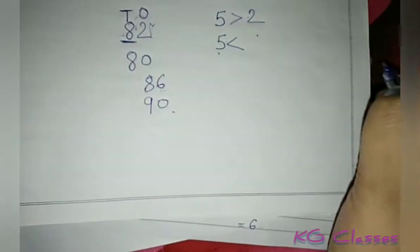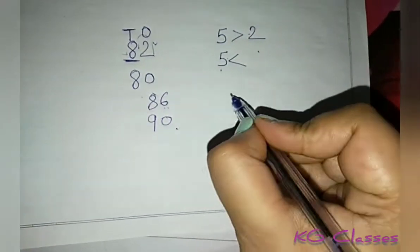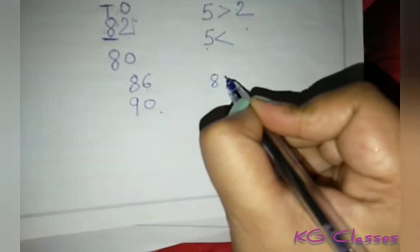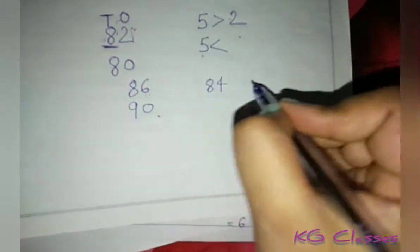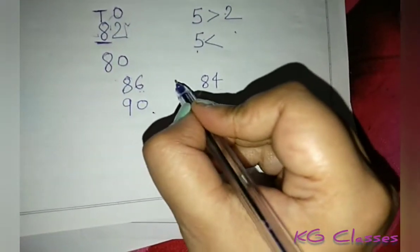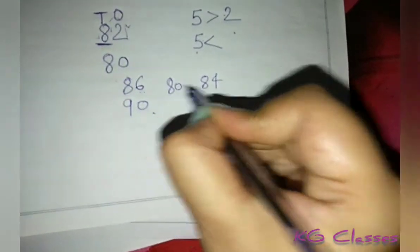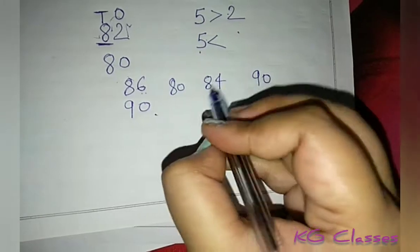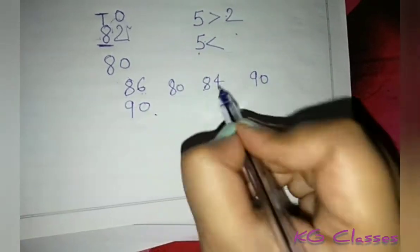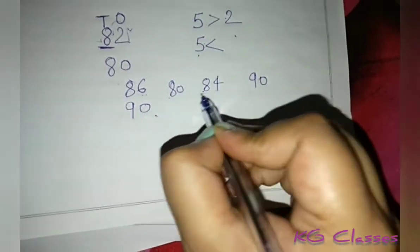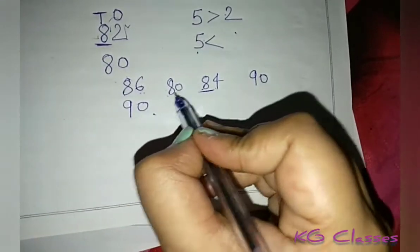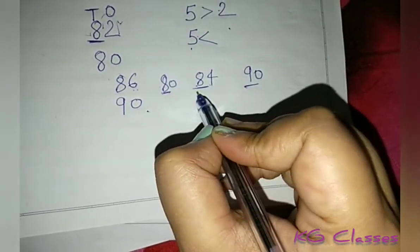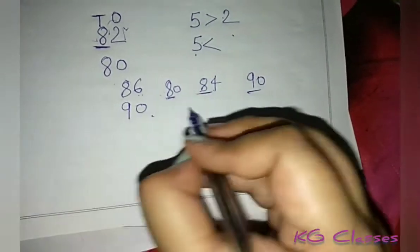We can also see this with 84. So 84 falls between 80 and 90. Since the ones digit 4 is less than 5, 84 rounds down to 80.